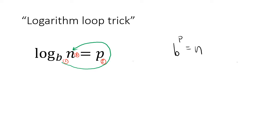It's very important to always go in the direction of the equal sign. What's also super cool about the logarithm loop trick is that we can apply it the other way too. If we do the loop trick starting at the base and going in the direction of the equal sign, the things we pass by are: the base (that's number one), the answer over here (that's two), and then the power (that's three).